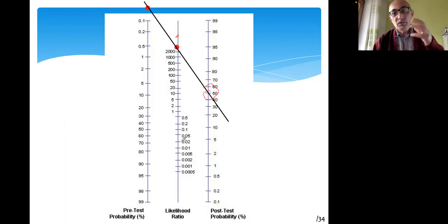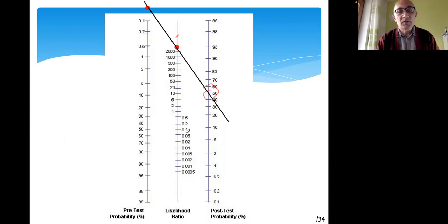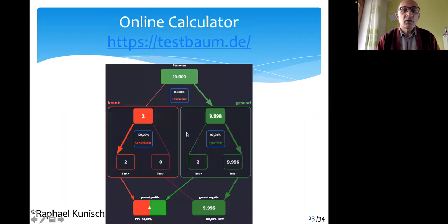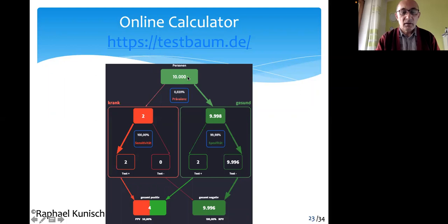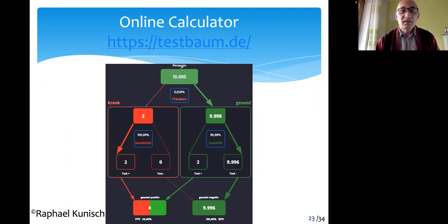Either you use the Bayesian formula — pretest to post-test — or you can use the Fagan's nomogram. Or you can use online calculators, such as TestBomb, developed by German scientist Raphael Kunisch. I suggest you click on that link and try entering different numbers yourself.